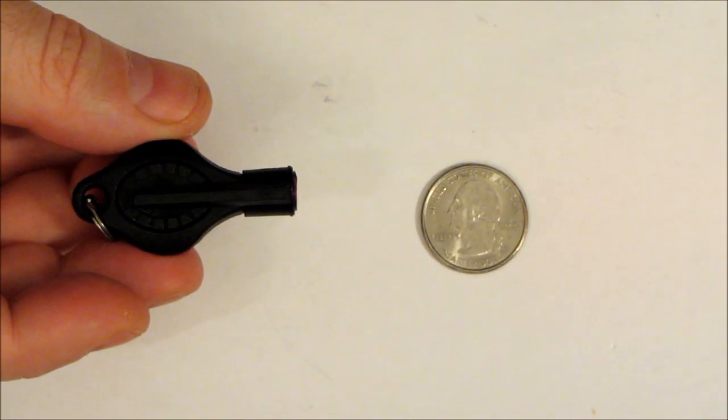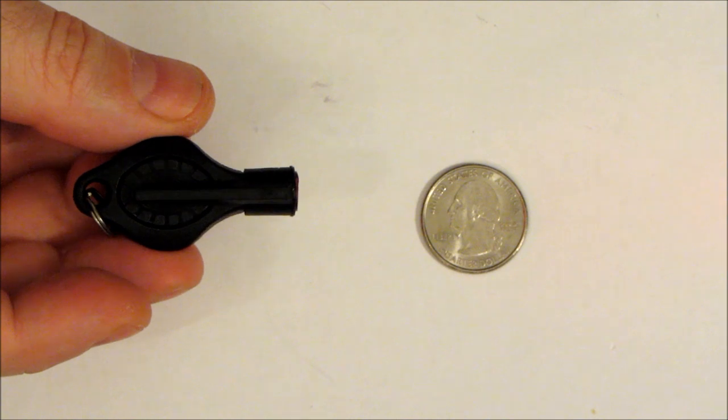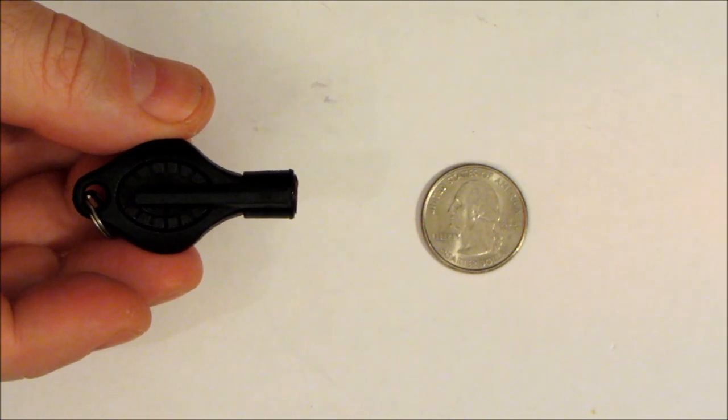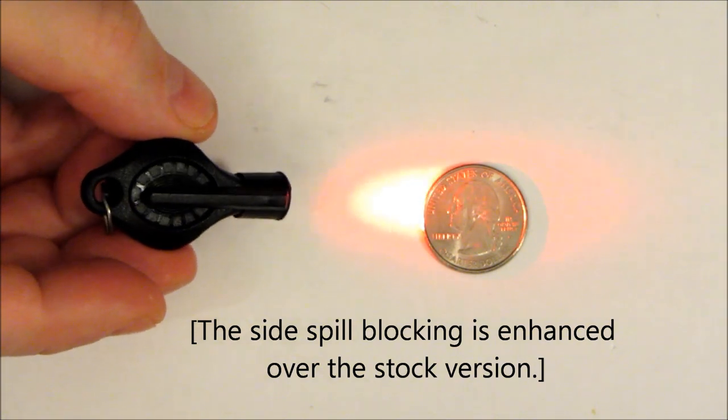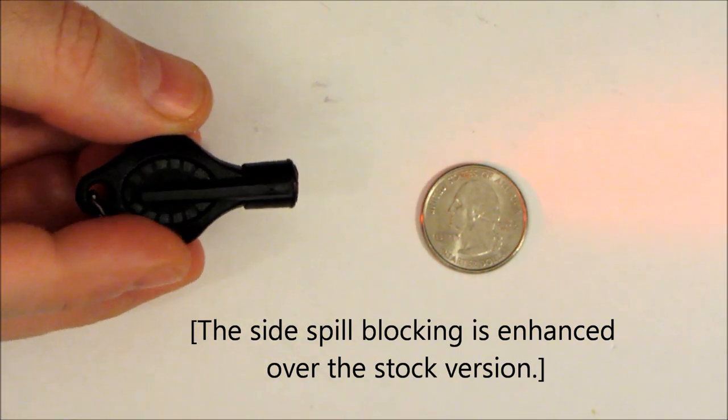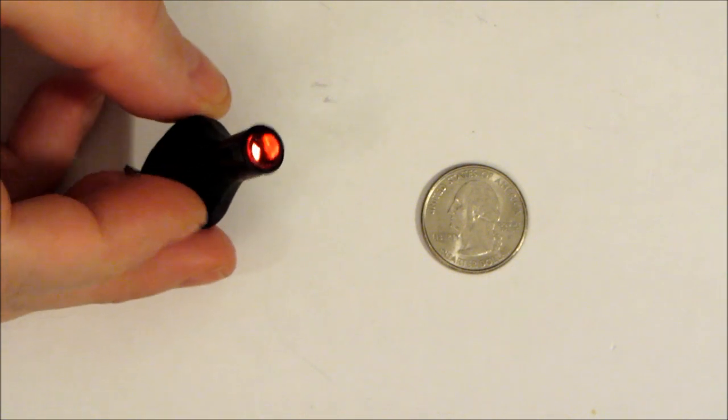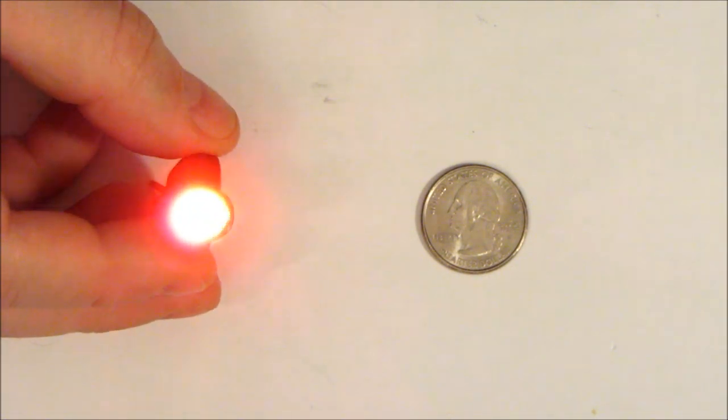So here it is in a close-up view. With the cap on, it still preserves the covert aspect in that it has no side light. It's on right now, but you can't tell if you view it from the side. It's only if you're in front of it that you can see the red beam.